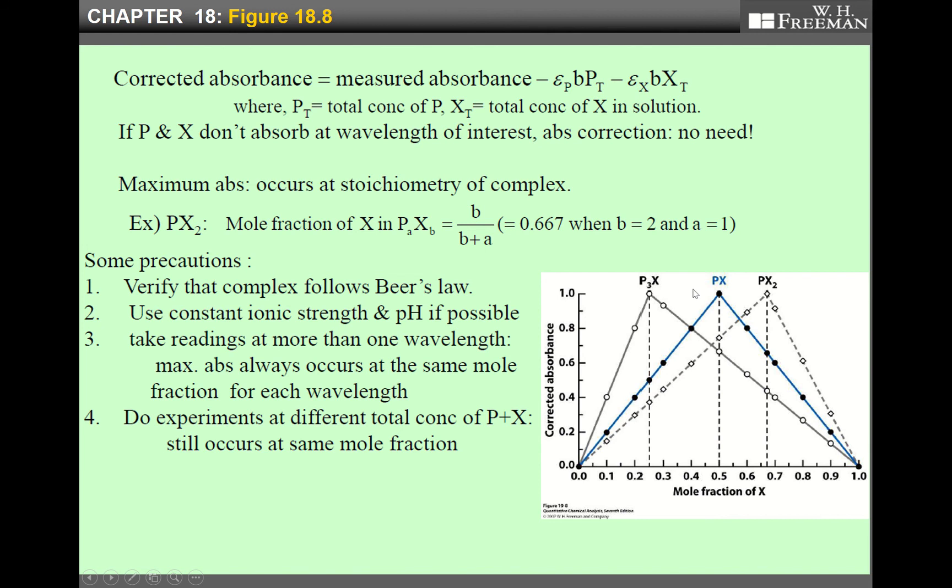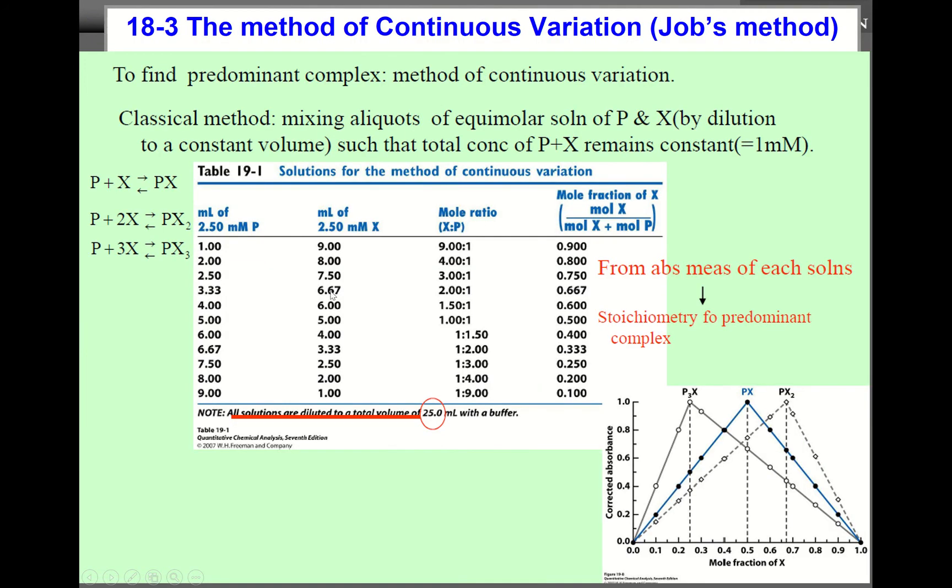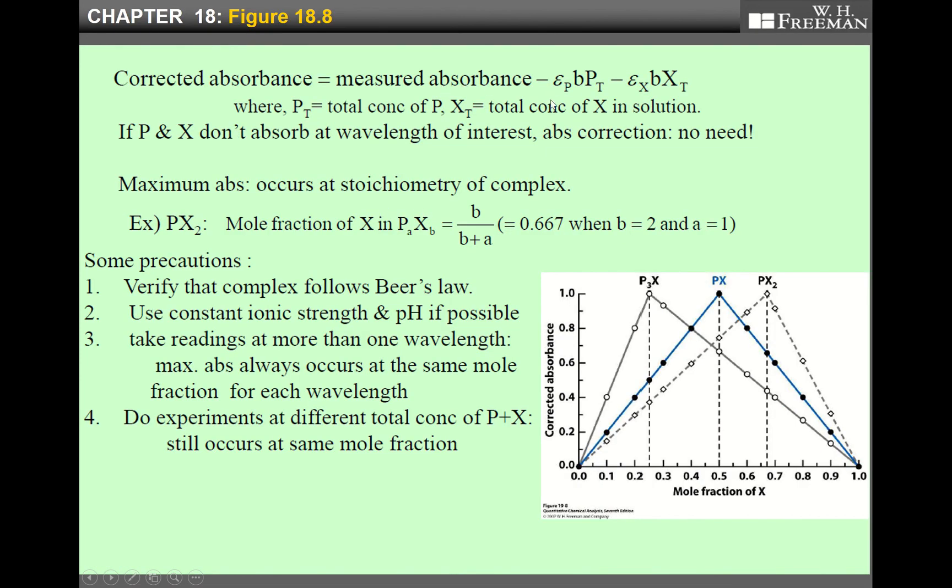What is the corrected absorbance? That corrected absorbance is the measured absorbance minus the absorbance by P and X. Since we assumed in this case the only PX absorbs light, but actually there is small absorbance due to species P and species X. Pt is total concentration of P and Xt is total concentration of X in solution. But if pure P and pure X don't absorb any light, this correction process is not needed. So from this figure, maximum absorbance occurs at stoichiometry of complex.